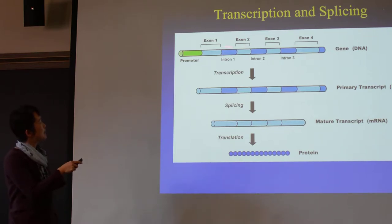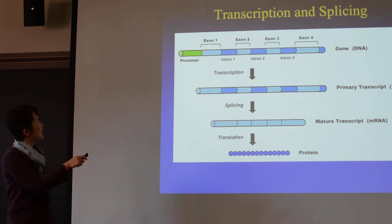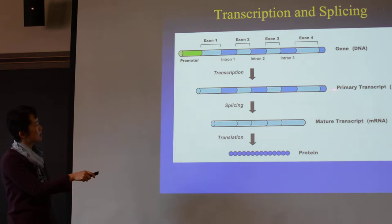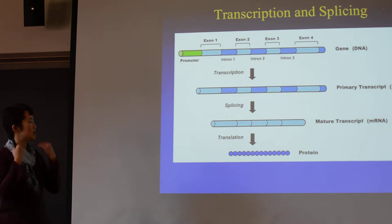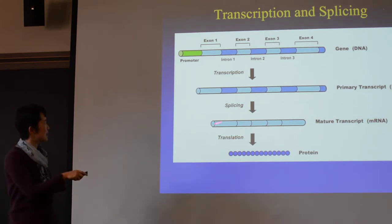We have a gene — it has a beginning. This part is not transcribed; it's kind of a signal to say transcription starts here. And it will be exon, intron, exon, intron. After the initial transcription, you make the RNA from this — this is the primary RNA. The introns are being spliced out, and the useful parts are being stitched together.